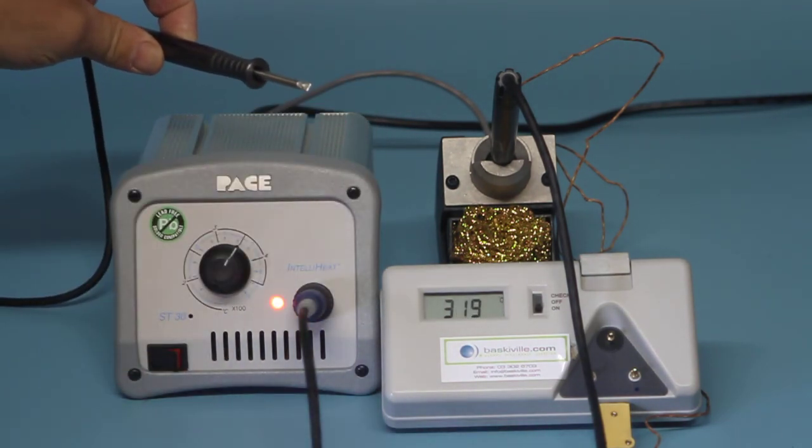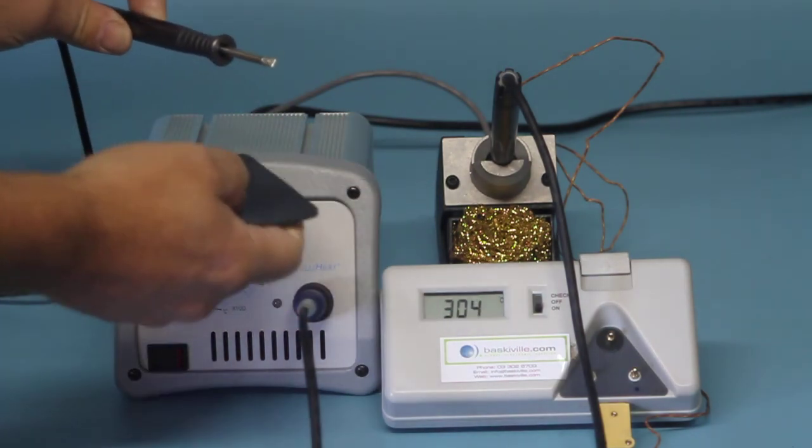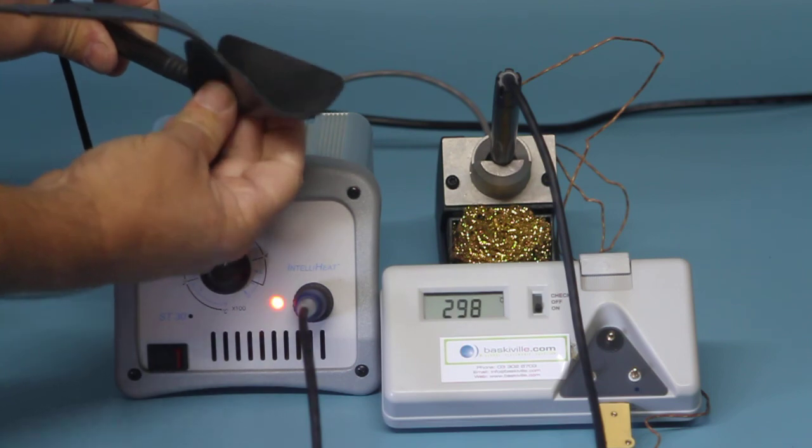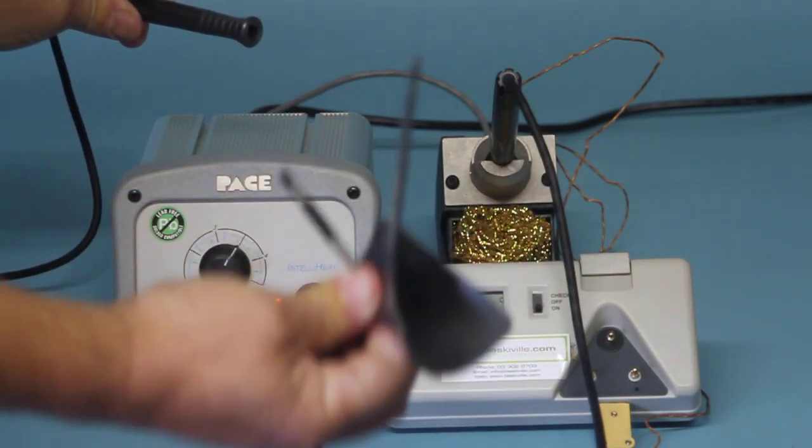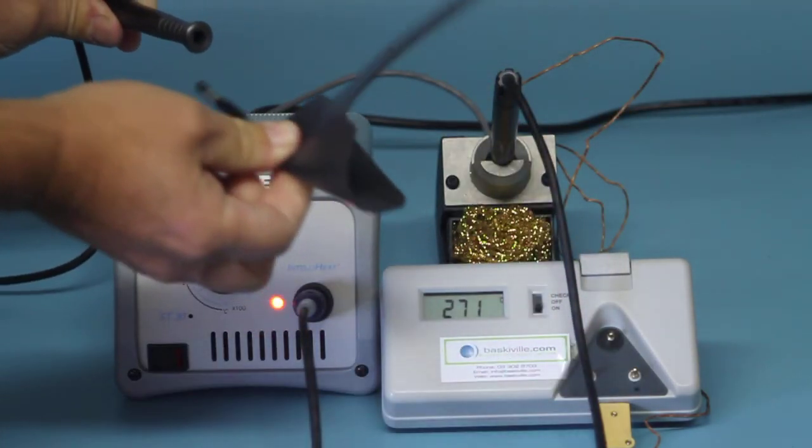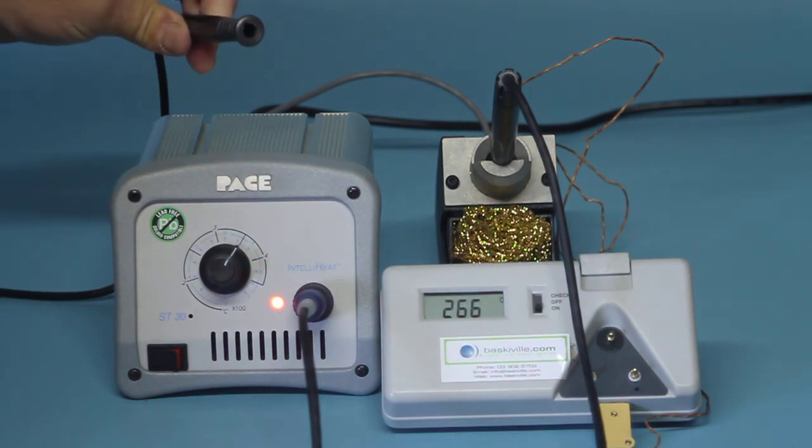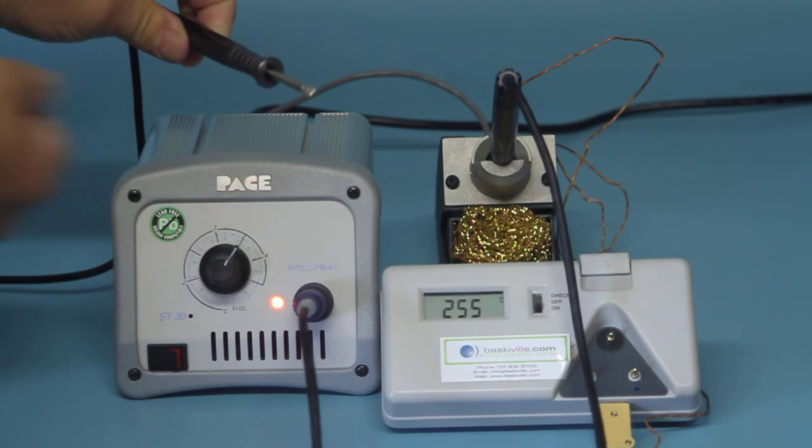Now when you're actually changing tips, I don't recommend using your hands like that. What is supplied is a little piece of rubber type stuff that when the tip's hot you don't feel it. So it's a good habit to get into using that. That's as simple as it is - the tip literally just locates in the wee groove and slides in, and that tip's ready to use.